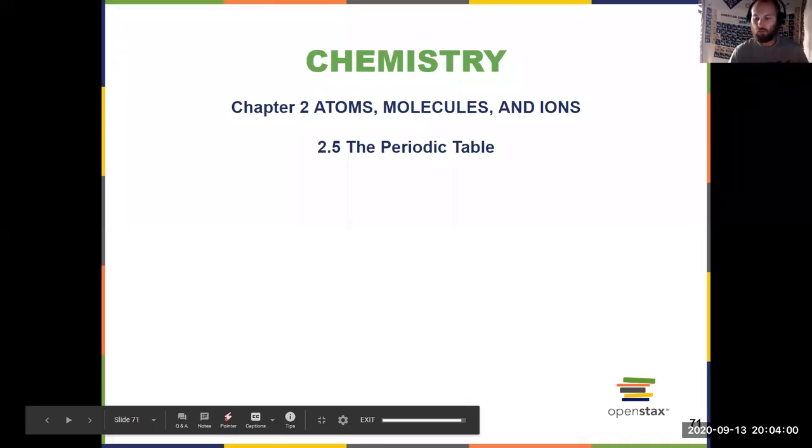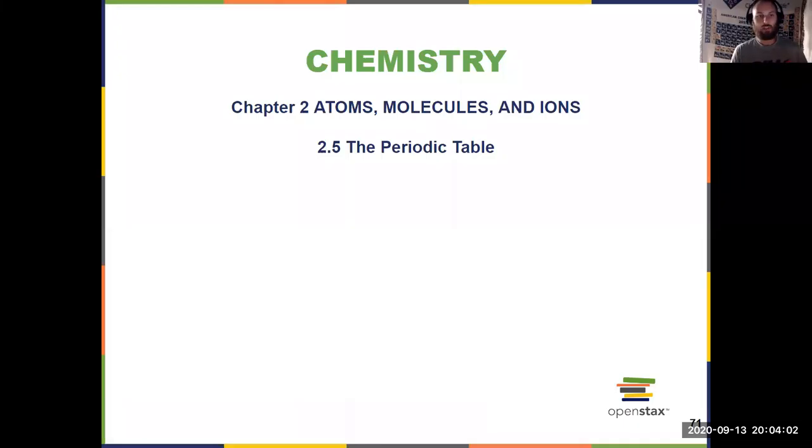In this video, we're going to cover section 2.5, where we will gather a little bit more information about the periodic table before we finish chapter 2 by figuring out types of compounds, be it molecular or ionic, and lastly, how to name them. But we need to figure out how to pull some information from the periodic table before we have that ability. So let's get into that.